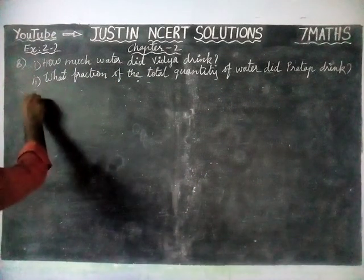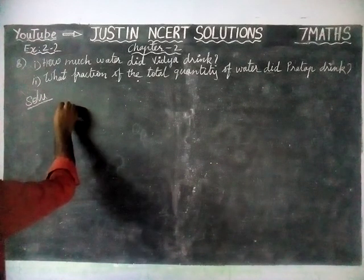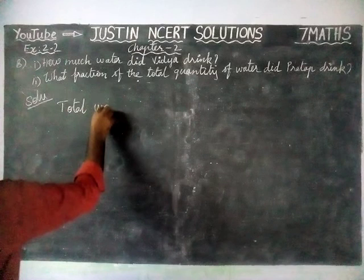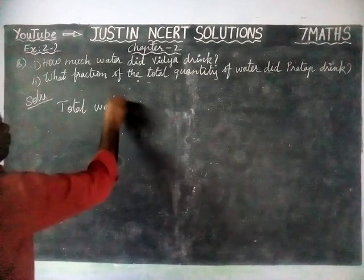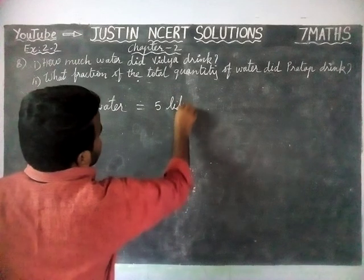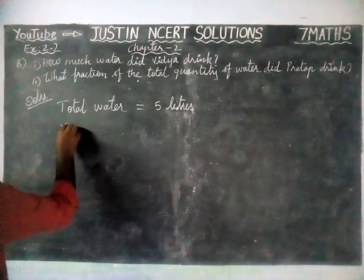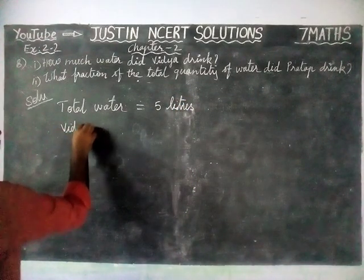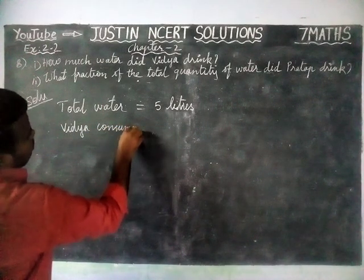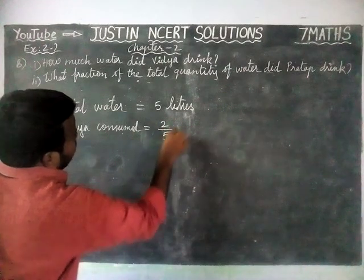First we have to write what they have given in the sum itself. How much water did Vidya drink? Total water is equal to 5 litres. Vidya consumed 2 by 5 of the water.